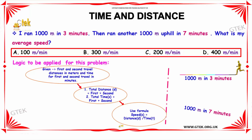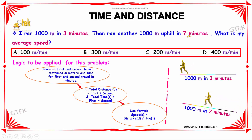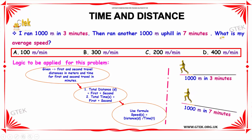The next problem is: I ran 1000 meters in 3 minutes, then ran another 1000 meters uphill in 7 minutes. So what is my average speed?